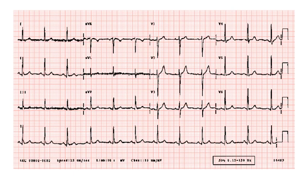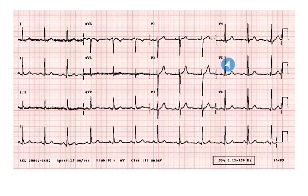Similarly, look at the S wave. It's tall in V1 and V2, then in V3 it becomes smaller, V4 more small, and in V5 and V6 it becomes very small.